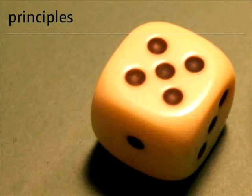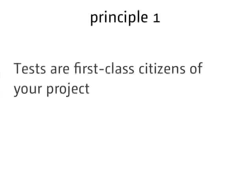The first principle is that tests are first-class citizens of your project. This means treating your test code with the same love, care, and attention as your production code — refactoring your test code, keeping it in version control, inspecting it, and having everyone care about layering, encapsulation, and all the object-oriented principles used to write production code. Your test code should have structure; you should be able to reason about it in the same way you reason about production code. Use a proper language with proper tooling, including an IDE where you can do refactoring.